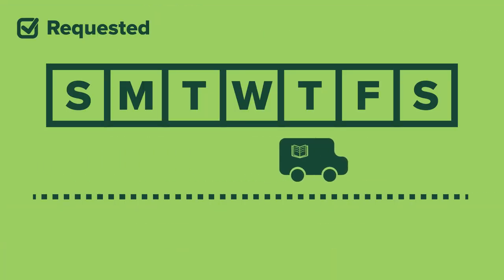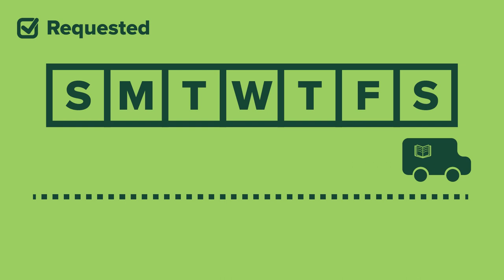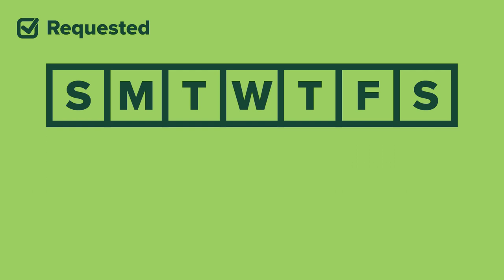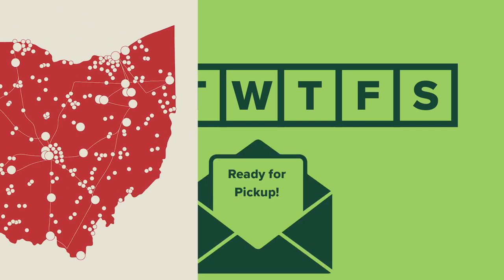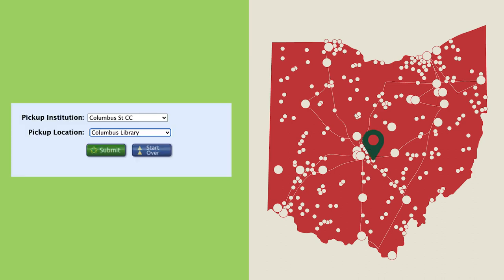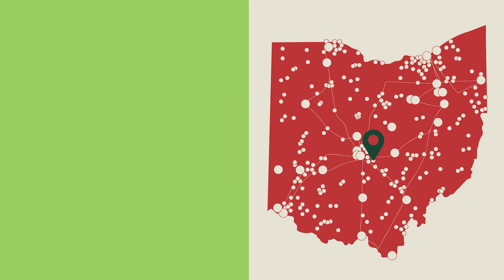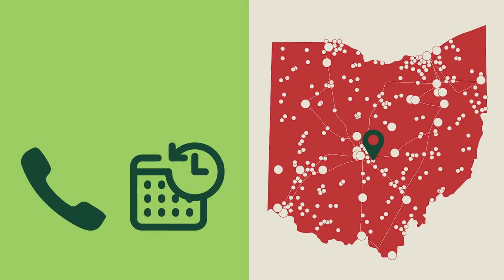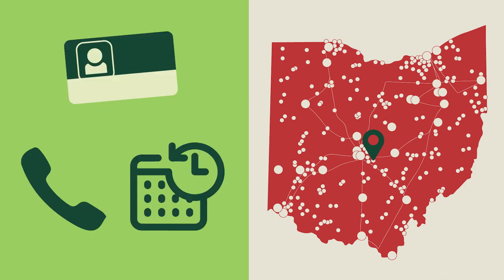Once you've submitted your request, your book should arrive within a week. You'll receive an email once your item is ready for pickup. If you live closer to another OhioLINK library listed, change the pickup location to the library closest to you. Be sure to call ahead and have your Ohio University student ID to check the item out when you pick it up.